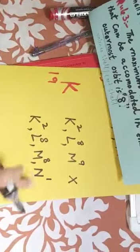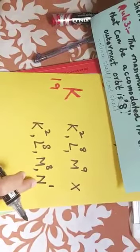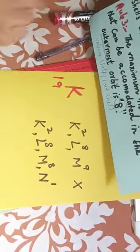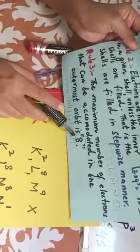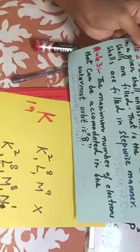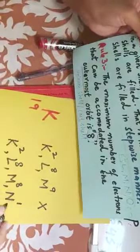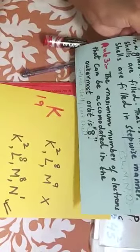Here are four shells and last shell is called valence shell and outermost shell. According to third rule, outermost shell not exceed by 8. Maximum 8. According to these three rules, this configuration will be okay.